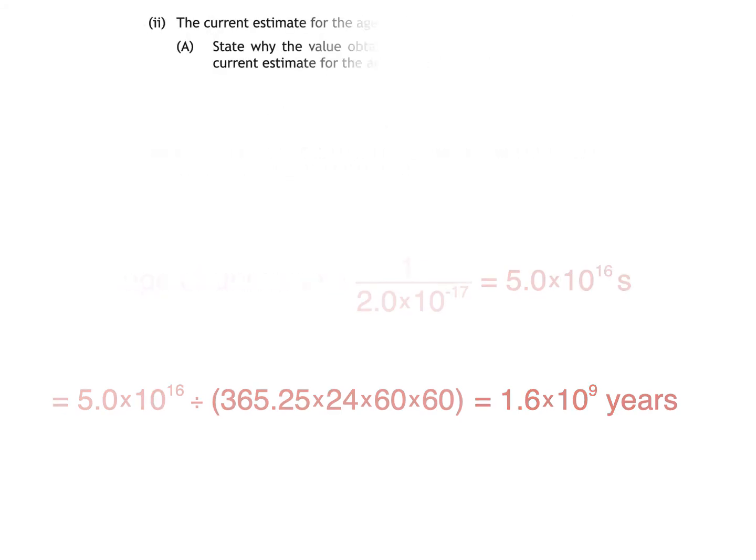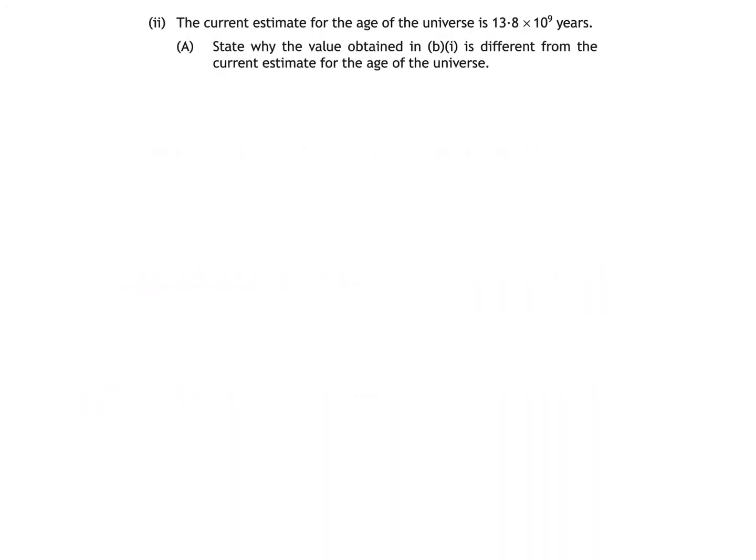Here's the first part of B part 2. The current estimate for the age of the universe is 13.8 times 10 to the power of 9 years. State why the value obtained in B part 1 is different from the current estimate for the age of the universe.